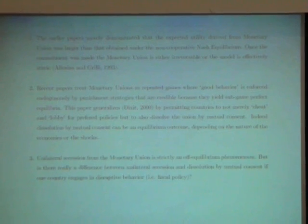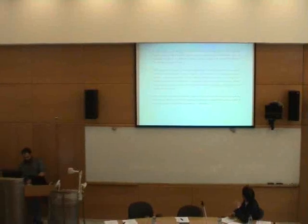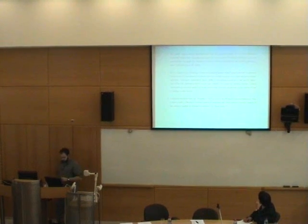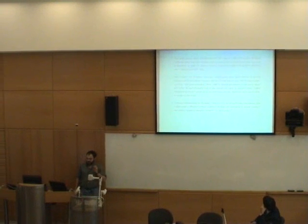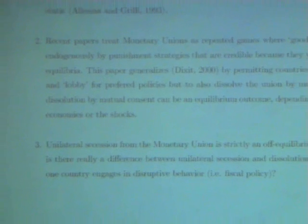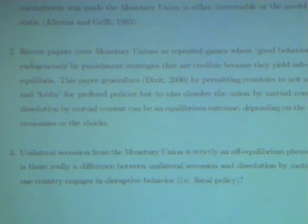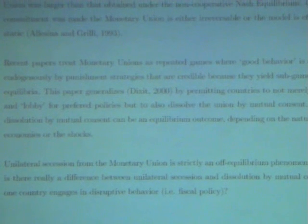Unilateral secession from the monetary union is strictly an off-equilibrium phenomenon in this model. I find that a little troubling, and that might be a function of my ignorance, the fact that I don't work in this field. But is there really a difference between unilateral secession and dissolution by mutual consent if one country engages in disruptive fiscal policy? You mentioned extending this to marriage and divorce — if I come home tonight and declare I'm no longer going to do the dishes or take out the garbage, my wife will kick me out. Is this unilateral divorce on my part or is this by mutual consent? The distinction is kind of fuzzy, at least as best as I can tell.